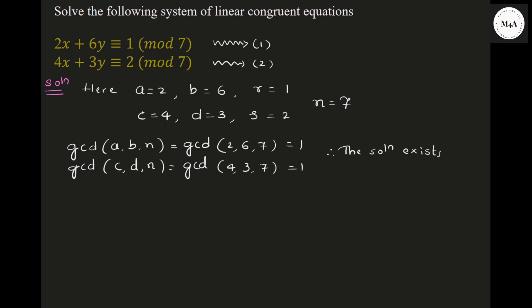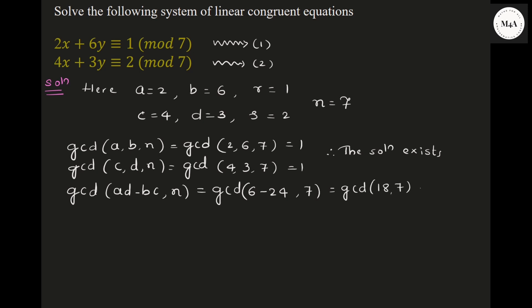Now we need to check whether this system of equations has a unique solution. For the solution to be unique, we need GCD(AD − BC, N) = 1. So GCD(AD − BC, N) = GCD(6 − 24, 7). Since we consider positive values, that is GCD(18, 7) = 1. This implies a unique solution exists.